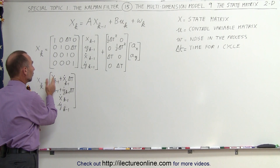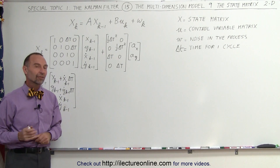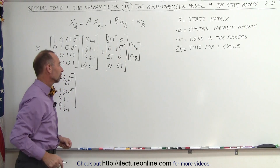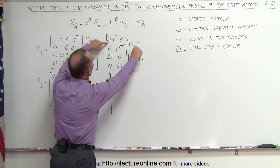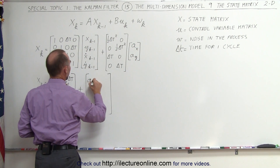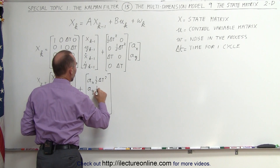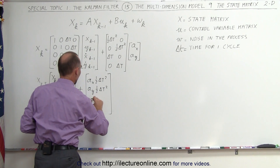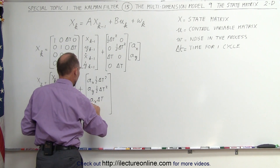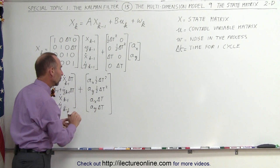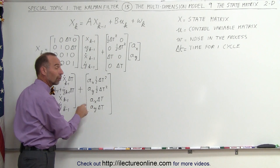That gives us the adjustment to the position from the previous state to the current state because of the velocity in the x direction, the adjustment to the position in the y direction because of the velocity in the y direction, and no adjustments for the velocity in the x and y direction, because for that we need the control variables. We add to that the multiplication here — again we end up with a four-by-one matrix — one half delta t squared times a sub x, then a sub y times one half delta t squared, then a sub x times delta t, and an a sub y times delta t. These are the adjustments: the first two elements are the adjustments to the x and the y position because of the acceleration, and these are adjustments to the velocity due to the acceleration.